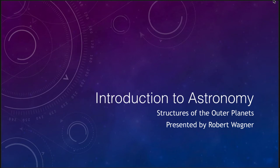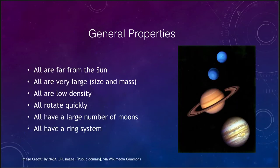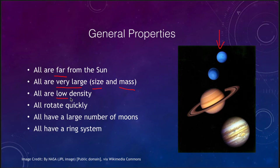Let's start off with some general properties. What do we know about these giant planets? Well, first of all they're all far from the sun. They are all very large in size and in mass. All of the terrestrial planets — Mercury, Venus, Earth, and Mars — would fit inside one of the smaller Jovian planets. They are low density, meaning they have a higher concentration of things like ices — water, methane, and ammonia — and gases than the inner planets. They all rotate very quickly and all have a large number of moons, and each has a ring system.